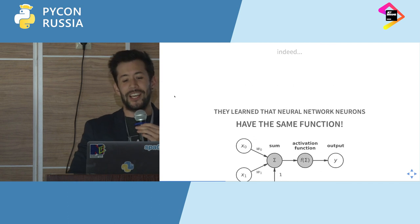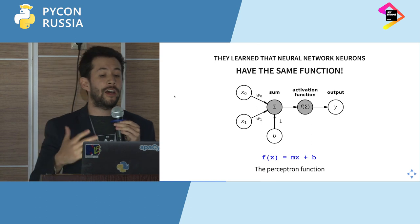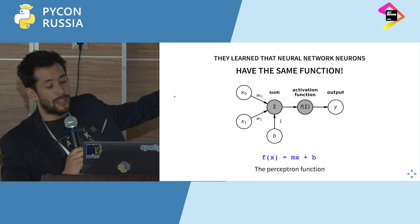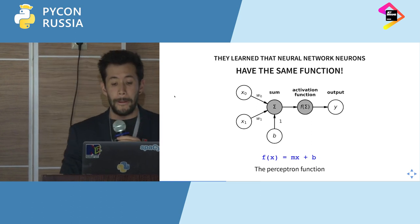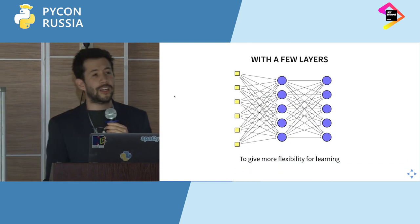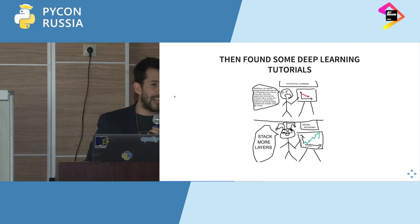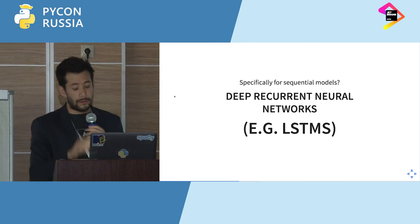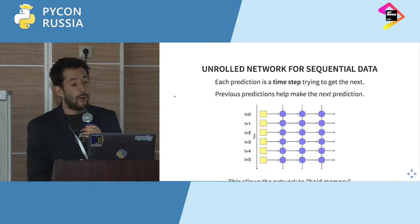They wanted to jump into deep neural networks. They also learned that the function we saw earlier is the same function as a neuron in a neural network — the perceptron function. It's the same: you have the input plus the bias, with an activation function, multiplied by the weights, equals the output. So they took one neuron, stacked a few more to allow for more complex functions, added layers for more flexibility in learning, and then found deep learning tutorials that said just add more layers.